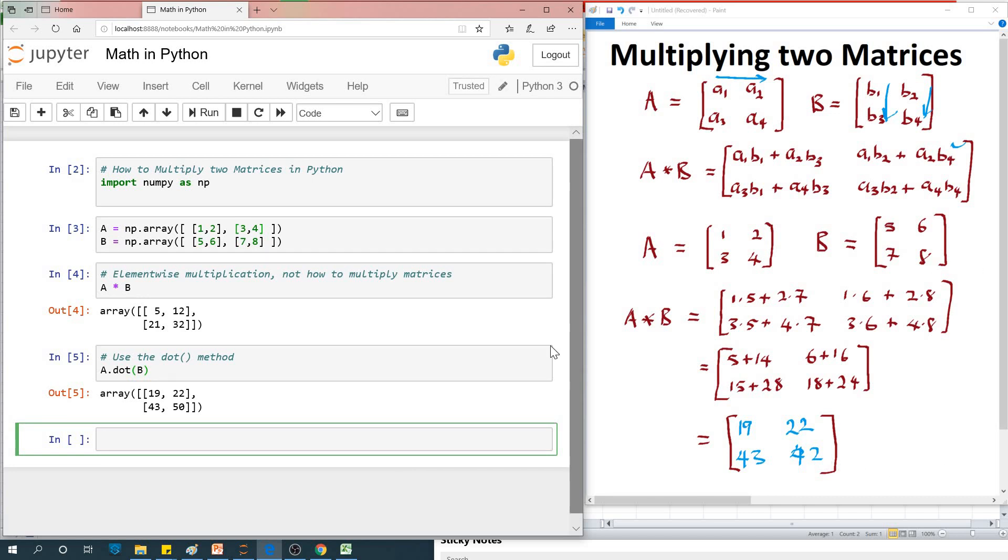Actually this is 50, not... yeah, so this should be 50. If I go back here, this should be 50. So five, six, seven, eight - this is going to be 50. I made some mistakes. I'll allow you to figure out where this mistake is coming from.